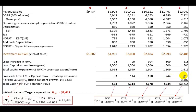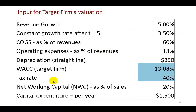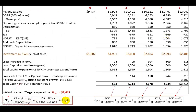At the end of the five-year horizon, we calculate the horizon value using the constant growth model, assuming a constant growth rate of 3.5%. Free cash flow at the end of year 5 is 315. We multiply that by (1 plus 3.5%) and divide by the difference between the WACC of 13.08% and the growth rate of 3.5%, giving a horizon value of 3,400.